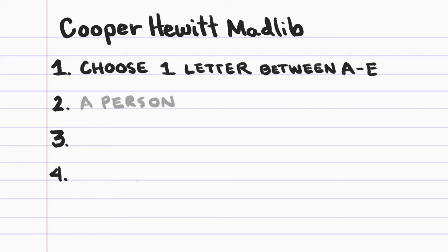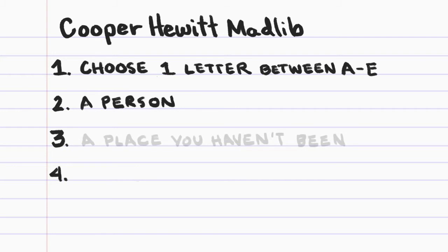Number two: write down the name of a person. This can be any person — it can be your friend, your neighbor, your teacher. It could also be a fictional character or someone you know of. Number three: write down the name of a place you haven't been. This could be anywhere — a park that you've wanted to go to but haven't quite gotten there yet, or a different country that you haven't been to. Anywhere that you can think of that you haven't been.